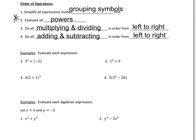Let's go through some examples. In the first example, 3 squared plus negative 2, we do the exponent first: 3 squared is 3 times 3, or 9, and 9 plus negative 2 is positive 7. In example two, remember that anything to the zero power is 1, so this becomes 1 plus 9, which equals 10. We had to do that exponent first.